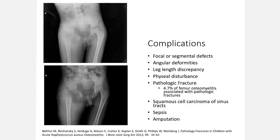In terms of complications, you can have focal and segmental defects, angular deformities, and leg length discrepancies, as well as physeal disturbance leading to leg length discrepancies and angular deformities. Also consider pathologic fracture — a study in the US found that 4.7% of children presenting with femur osteomyelitis had associated pathologic fractures. The long-existing presence of a sinus tract is at risk of malignant degeneration to squamous cell carcinoma. Generalized sepsis is also a concern. Finally, if an infection cannot be controlled and is life-threatening, you might need to consider amputation.